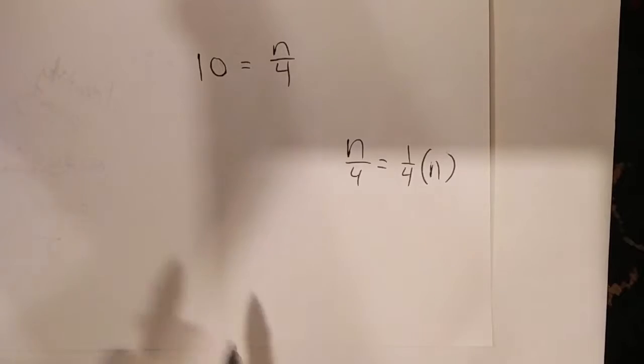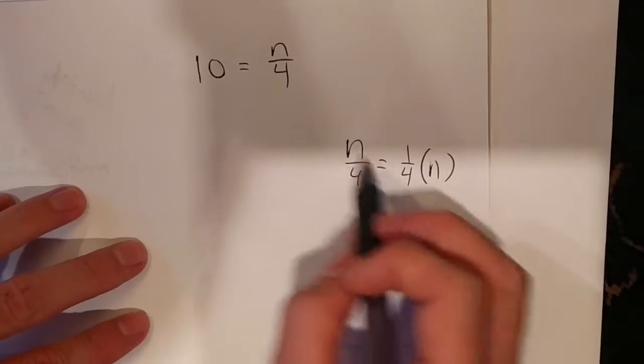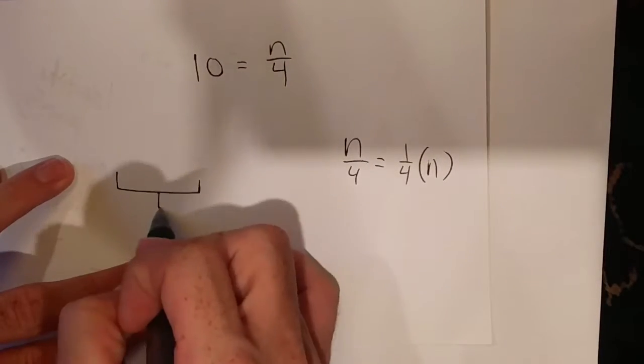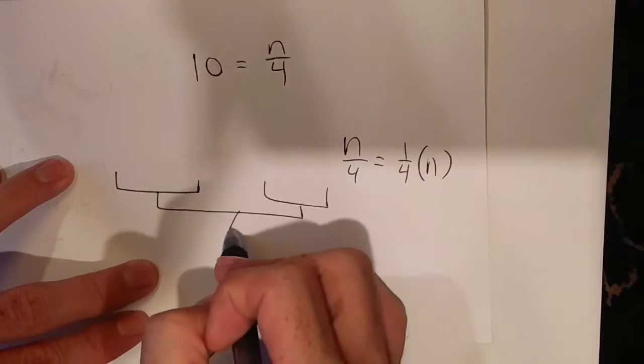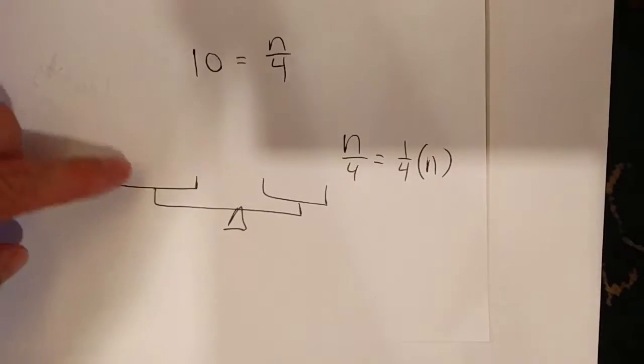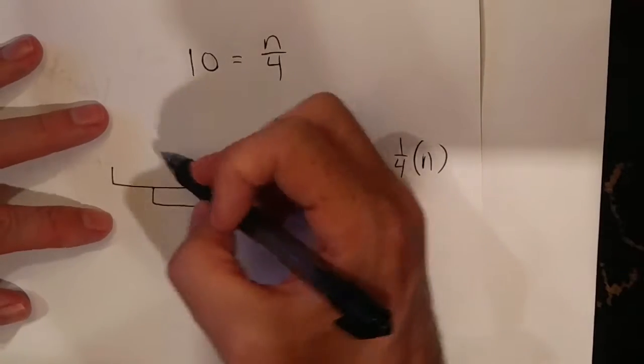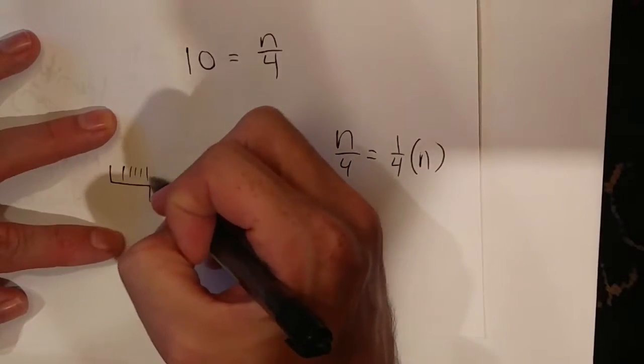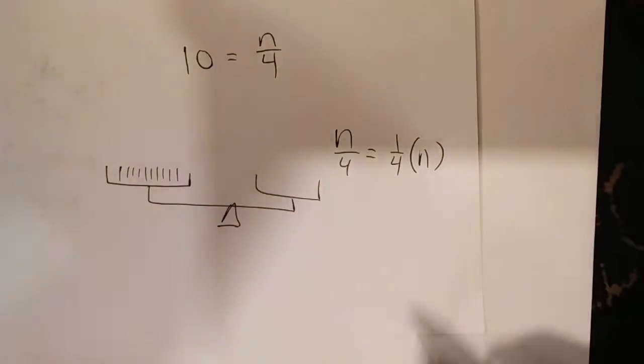And this one I'm actually going to draw out. I have a balance, and remember I like my balances because these are easy to draw. On the left side here I have 10, so I'm just going to draw in 1 2 3 4 5 6 7 8 9 10.